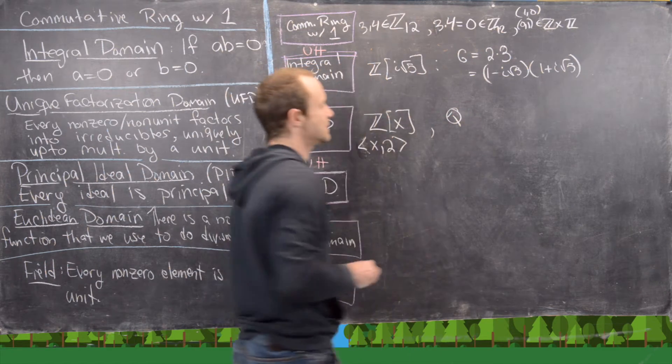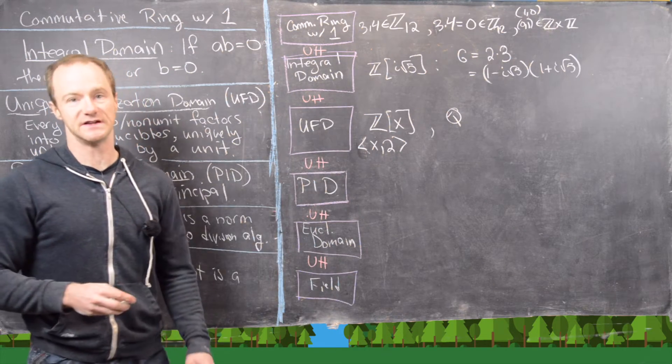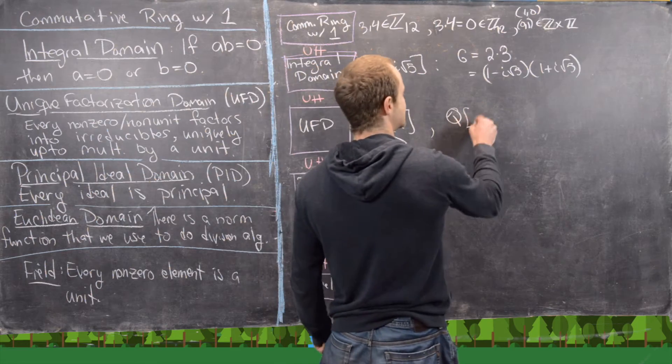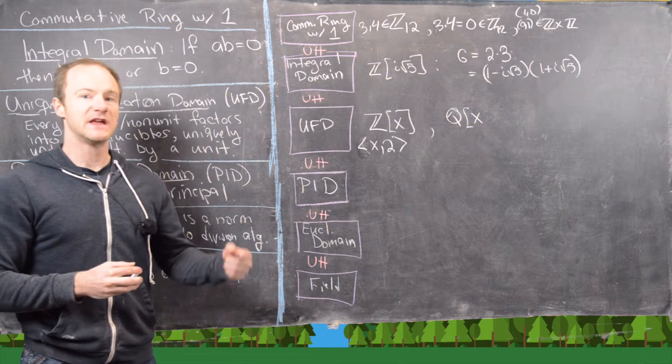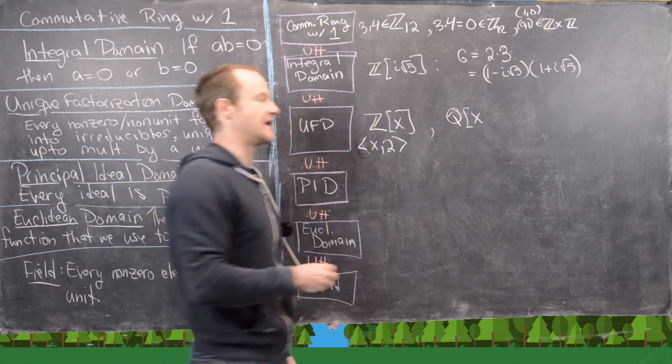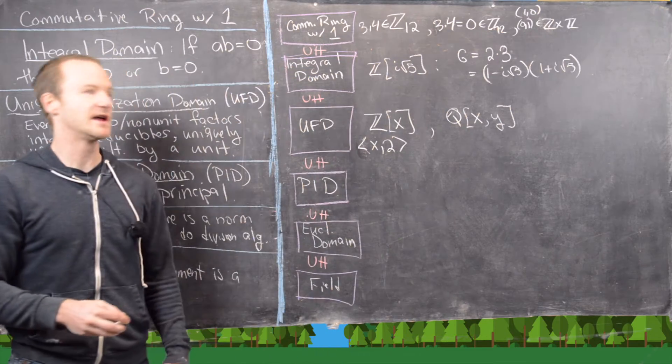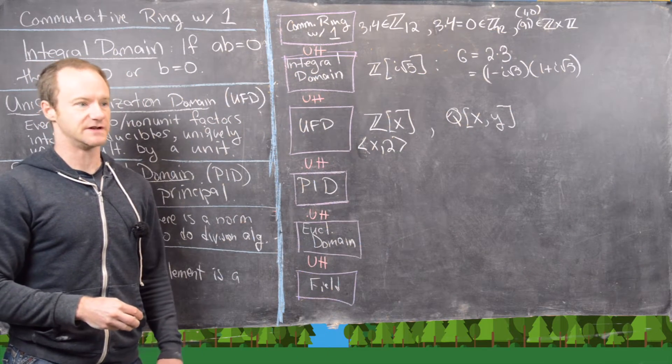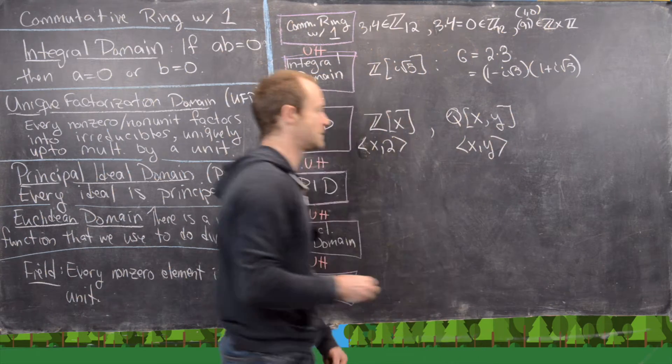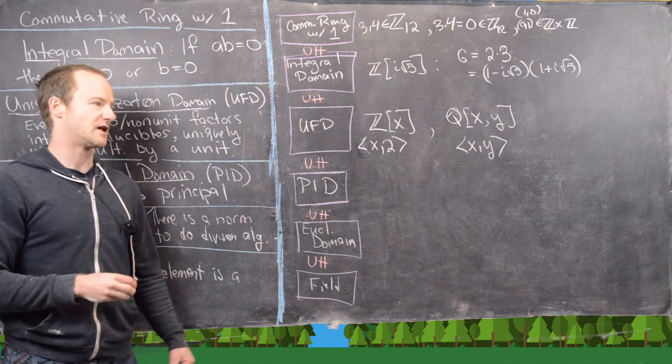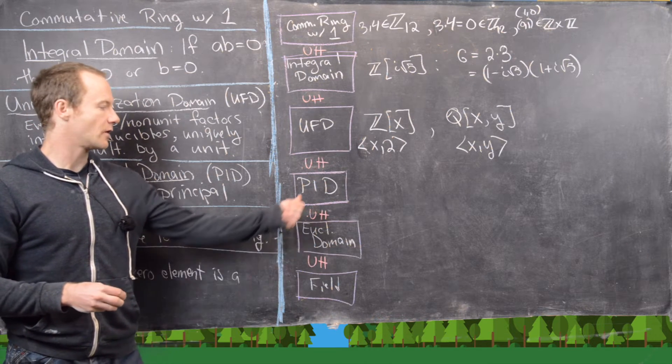In a previous video we proved that this was a non-principle ideal. And here's another example. So if we take Q, we know that Q is a field. But it being a field makes it a UFD. And then that makes Q adjoined X a UFD as well. But then if we do Q adjoined X adjoined Y, in other words Q adjoined XY, that's also going to be a UFD. And then we can look at the ideal generated by X and Y. And that's going to be a non-principle ideal. We need both of those generators in order to get the whole ideal.